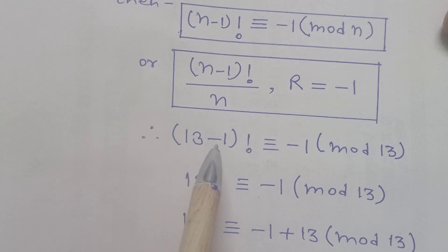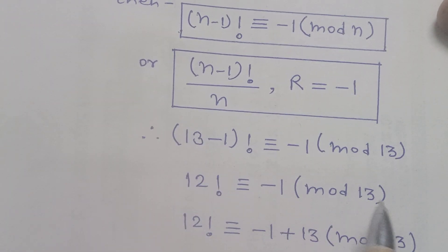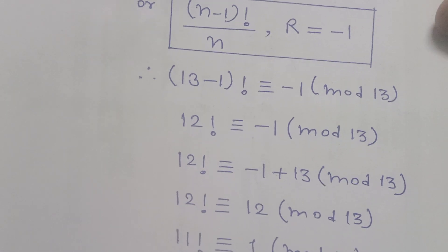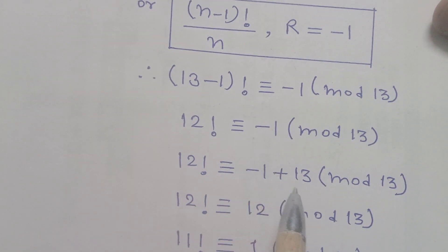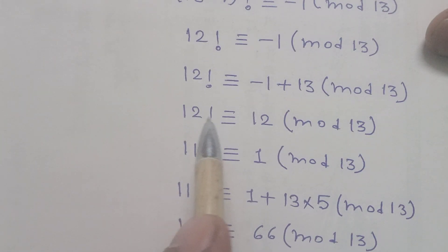13 minus 1 is equal to 12, so 12! is equal to this. We can write this in the form where 13 will be common. So 12! is equal to -1 plus 13, and 13 minus 1 is equal to 12. Both sides we divide by 12.